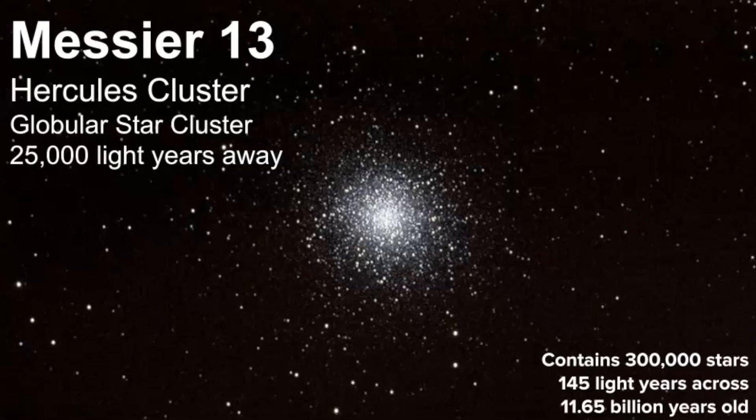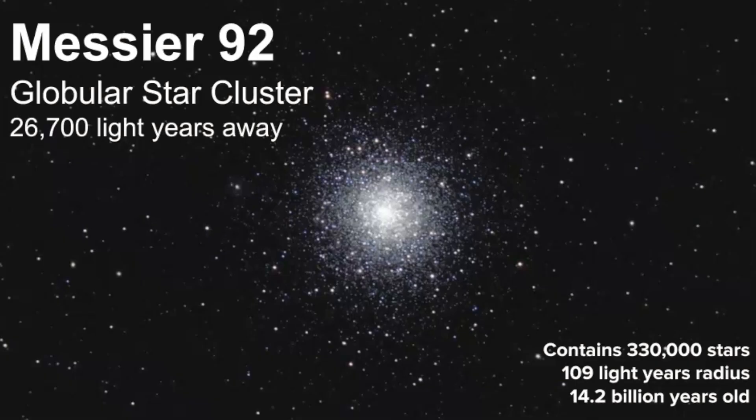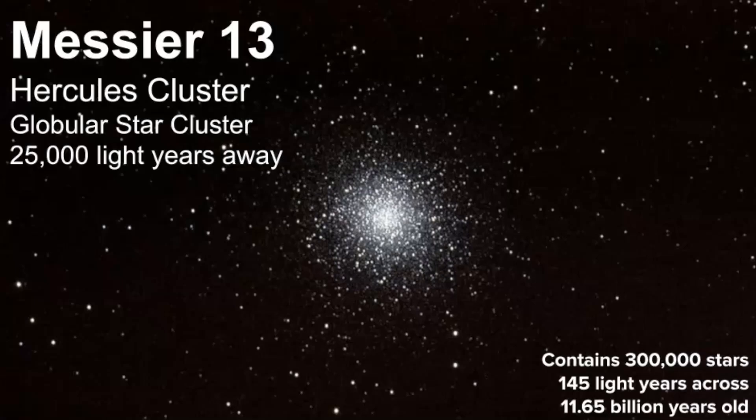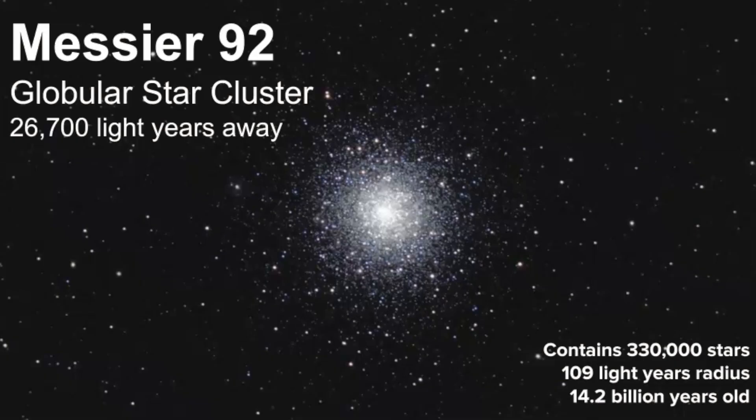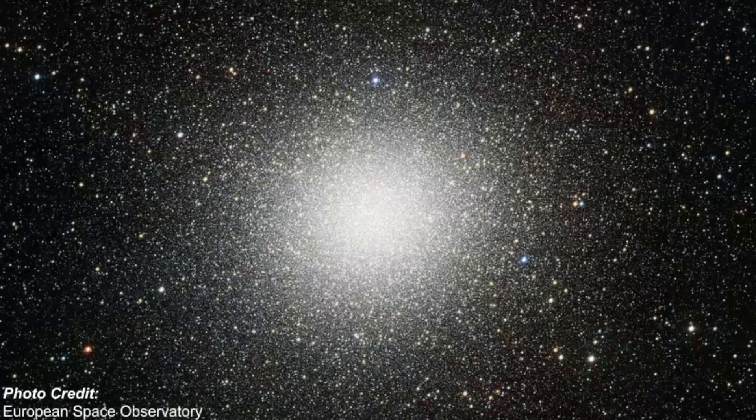Some of the famous globular clusters are Messier 13, that's in Hercules, as well as Messier 2, also in Hercules. So you want to just notice that shape. They really have that. To us, it's like a circle, but in 3D, it's like a sphere shape.